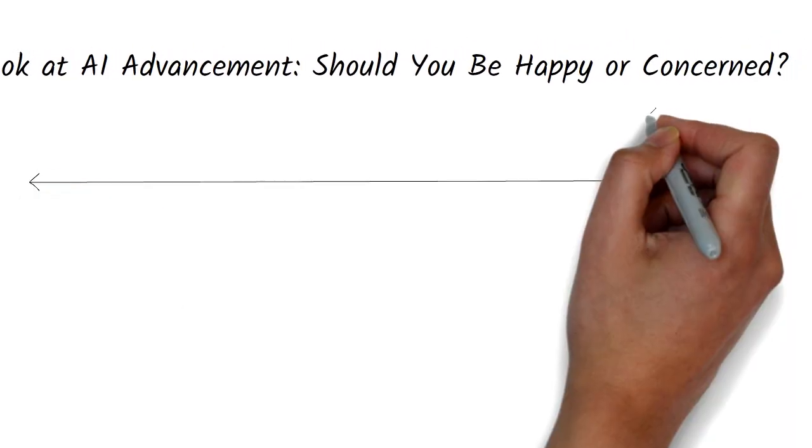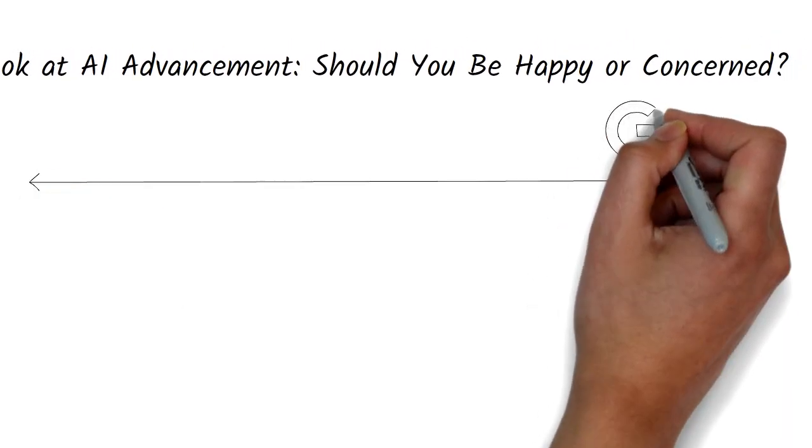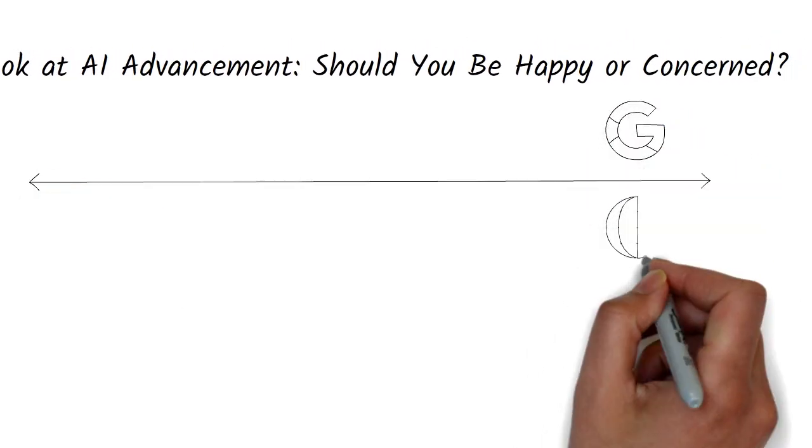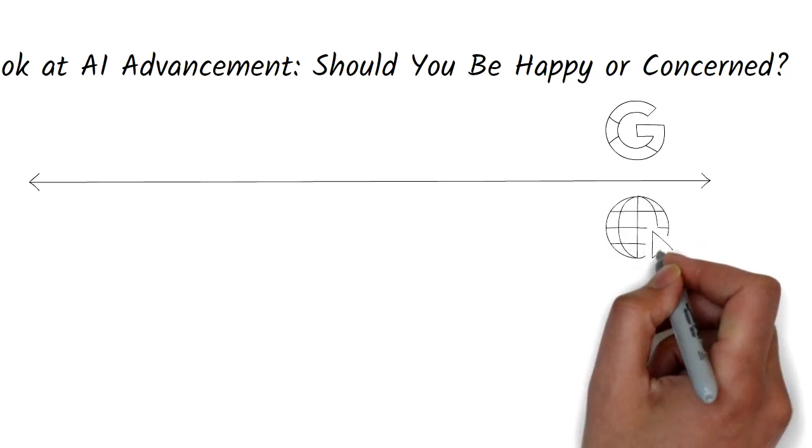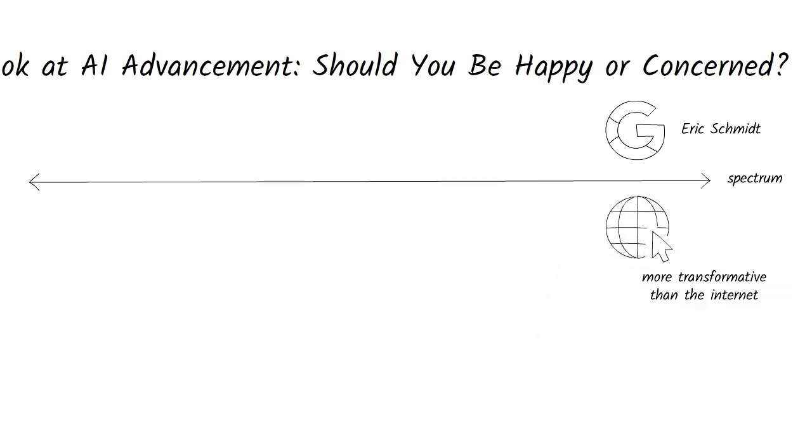On one side of the spectrum, we have voices like Eric Schmidt, the former CEO of Google, who believes that AI is severely under-hyped. He says that AI will be more transformative than the internet. Of course, Google is in the AI business.